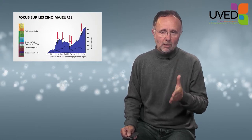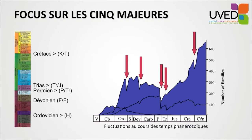I'm going to list them very quickly. You can see them on the left-hand side stratigraphic column. The first one during the Ordovician, the second during the Devonian at the Frasnian-Famennian limit, the following one — the most important — the Permian-Triassic boundary, and the fourth one at the highest Triassic, the limit between Triassic and Jurassic. And finally, Cretaceous and Tertiary — the last one, during which dinosaurs disappeared. On the right-hand side, you have red arrows showing the five crises over a curve of marine families from the primary era to current time.